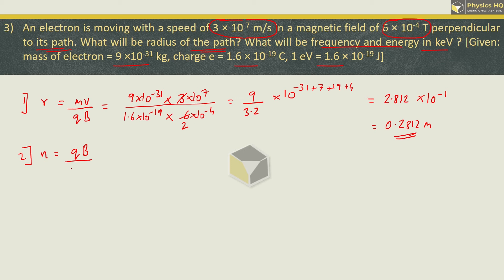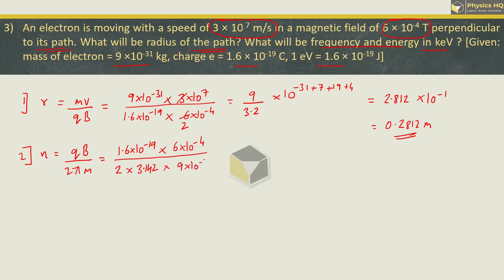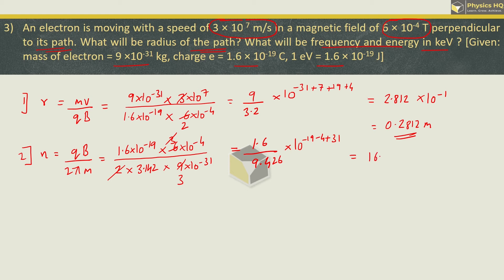Next, they have asked for the frequency, given by f = qB / (2πm). Charge = 1.6 × 10⁻¹⁹ C, magnetic field = 6 × 10⁻⁴ T, divided by 2 × 3.142 × mass (9 × 10⁻³¹). Solving: 1.6 / (3.142 × 3) with powers 10⁻¹⁹ × 10⁻⁴ / 10⁻³¹, we get the answer as 16.97 × 10⁶ Hz, which is 16.97 megahertz.